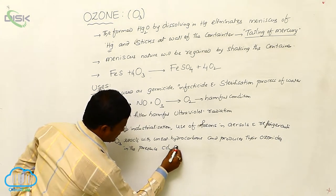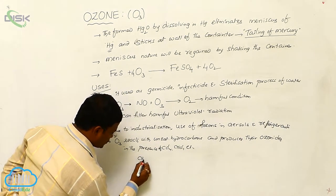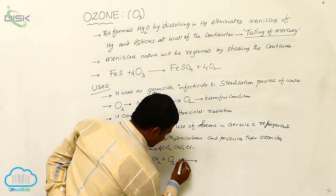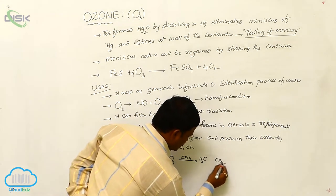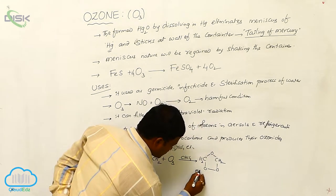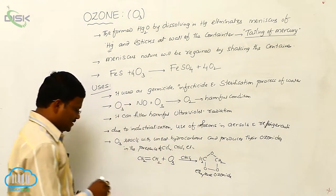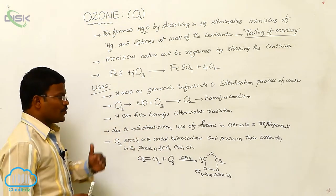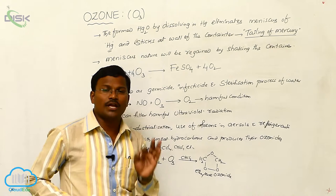For example, CH2=CH2 when reacted with ozone in the presence of chloroform (CHCl3, CCl4, etc.) produces CH2-CH2O. The name of this compound is ethylene ozonide. Similarly, ozone by reacting with potassium iodide solution forms a buffer.